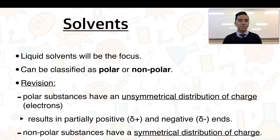As a bit of revision, polar substances have an unsymmetrical distribution of charge, which essentially are the electrons, and what this means is that you end up establishing an end that is partially positive and an end that is partially negative. Nonpolar substances, however, have a symmetrical distribution of charge, so you can't establish these partially positive and negative ends.